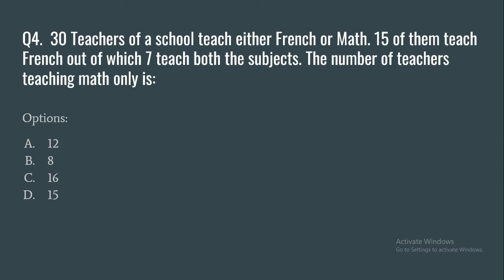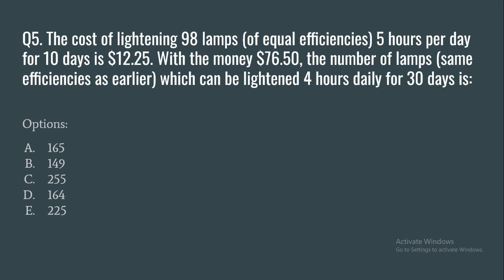Question 4: 30 teachers of a school teach either French or math. 15 of them teach French, out of which 7 teach both subjects. The number of teachers teaching only math is: 12, 8, 16, or 15.